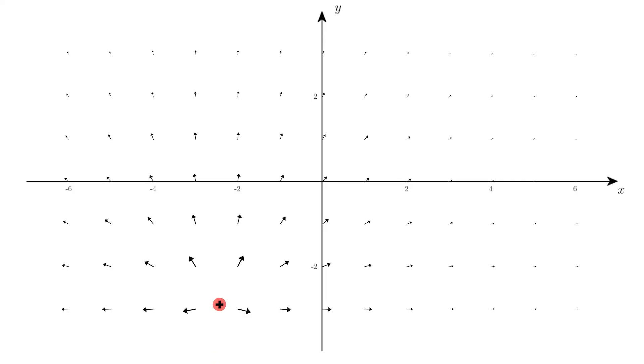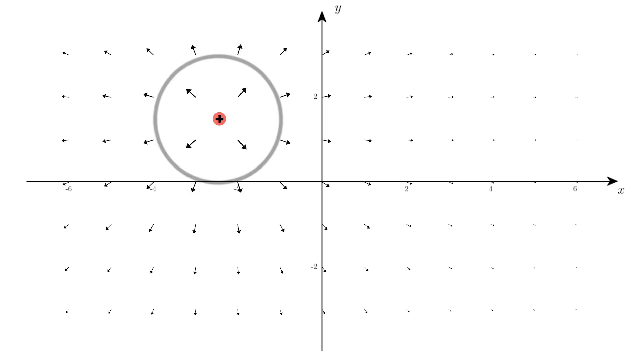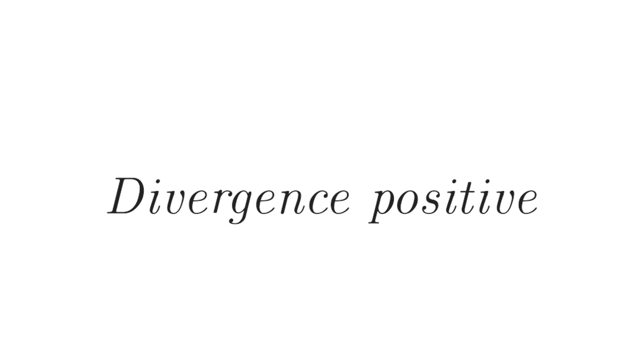For example, if you have a positively charged particle sitting here, we can see around this circle here we have an outward flow of vectors. And so we say the divergence is positive.